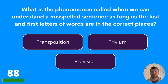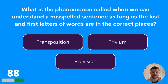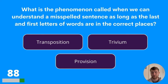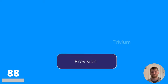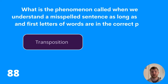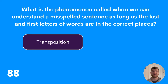Question eighty-eight: what is the phenomenon called when we can understand a misspelled sentence, as long as the last and first letters of words are in the correct places? Transposition, trivium, or provision? The answer is transposition.